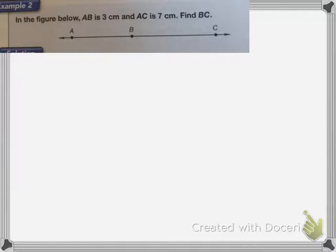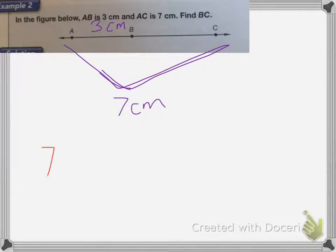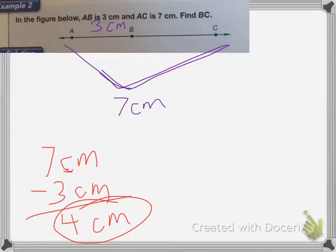This next one is in the figure. AB is 3 centimeters, and AC is 7 centimeters. Find BC. So if I know that AB is 3 centimeters, and then I know the whole thing is 7 centimeters, so to find my missing amount, I'm going to subtract 3 centimeters from 7 centimeters to find the missing length. And that is equal to 4 centimeters. That's your answer.